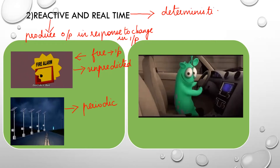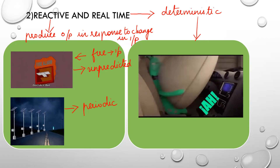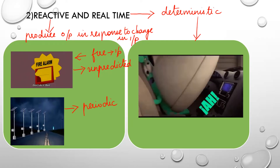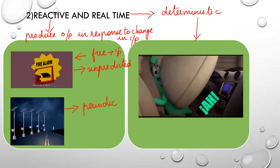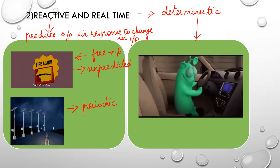What is a deterministic system? Consider this example: you are going in a car and suddenly you meet with an accident. What happens? The air balloon opens. The air balloon opening should happen immediately — if there is an accident, the air balloon should open immediately; it cannot open after 10 minutes. Such a system is called a deterministic system.